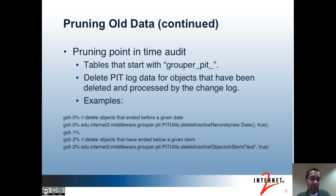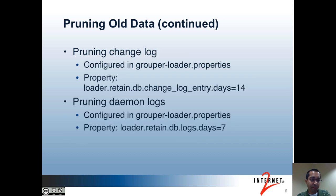The second example allows you to delete old data based on a stem, which is very similar to the obliterate-stem-gsh command. You probably also want to make sure that old changelog data gets deleted. Grouper stores incremental changes in a table so consumers can get the updates in near real-time. The changelog data is already deleted by default by the Grouper daemon, and by default 14 days of changelog data is retained, but you can update that in the grouper-loader.properties file. Daemon logs are also stored in the database. Log entries are created whenever various daemon jobs run, including the changelog daemon, the job to maintain rules in Grouper, and loader jobs. By default, 7 days of daemon logs are retained, and again this is configurable in the grouper-loader.properties file.